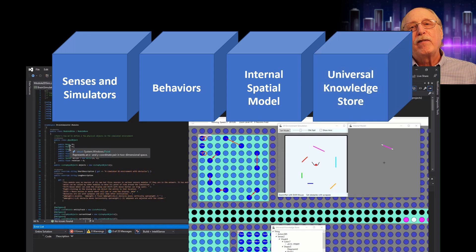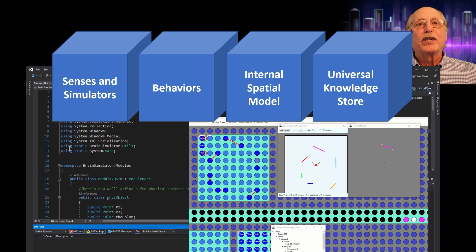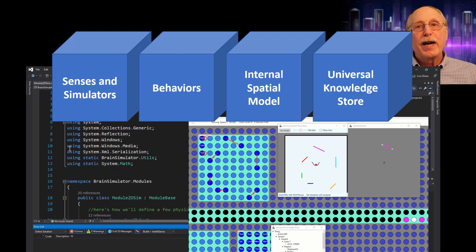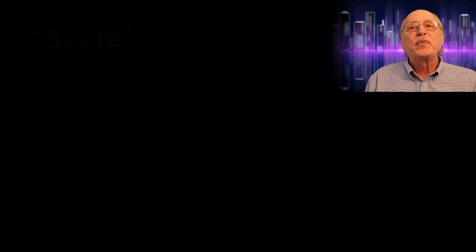Modules are written in a high-level language, like C-sharp, and are combined with neural signals to create AGI applications, which implement some facet of general intelligence. These all come together to form a virtual entity I call Sally.